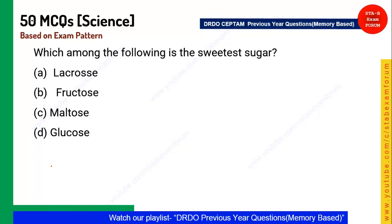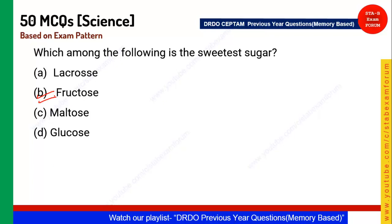Next question: Which is the sweetest sugar? All options are types of sugar with different compositions, but fructose has the highest sweetness content. Fructose is the correct answer.